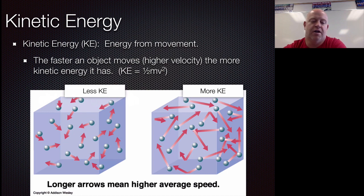So let's take a look down here. Longer arrows means higher average speed. So here we have longer arrows, so they're moving faster, so they have more kinetic energy. Here we have shorter arrows, so they're moving slower, so they have less kinetic energy. You could call these arrows vectors for those math people out there. So that's kinetic energy.